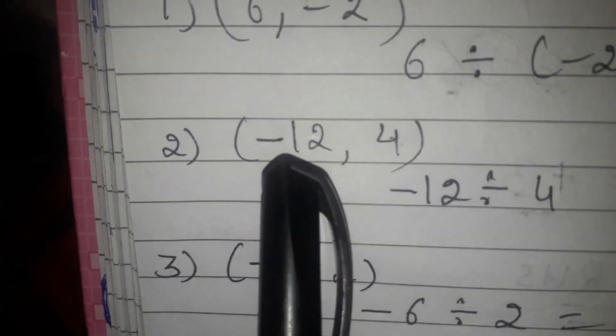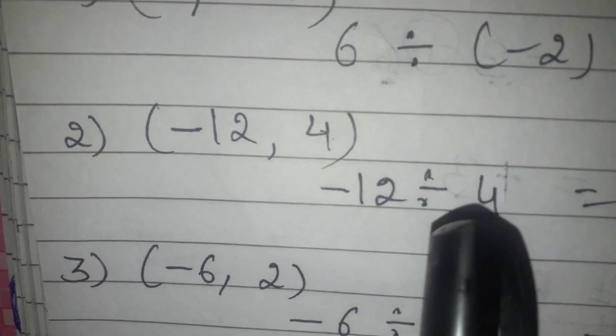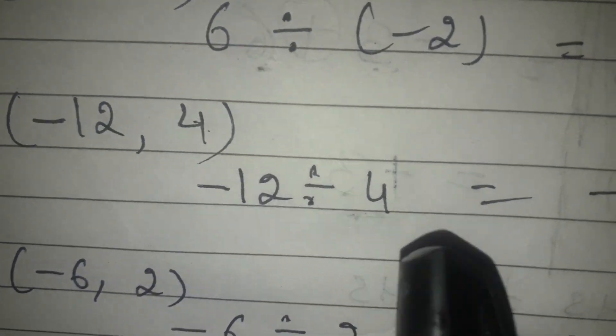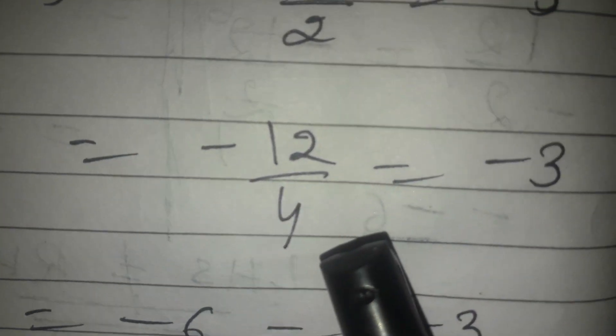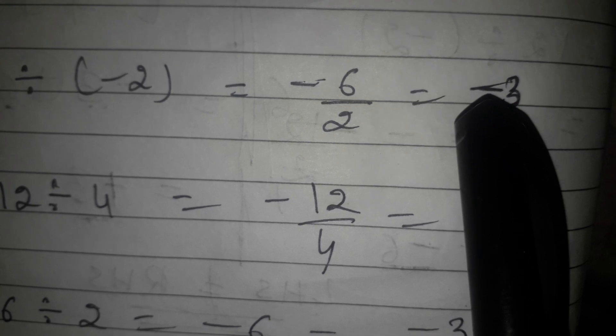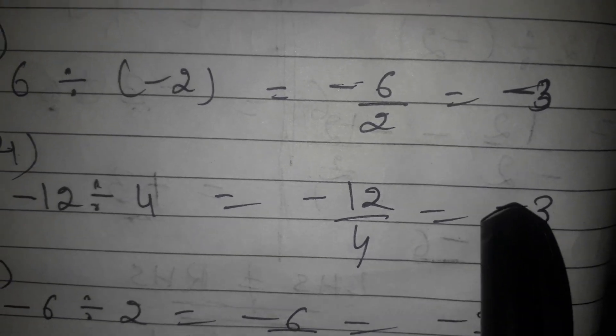Second pair is minus 12 and 4. Minus 12 is divided by 4. I will write minus 12 upon 4. 4 ones are 4, 4 threes are 12. Answer again is in each and every case your answer should be minus 3.